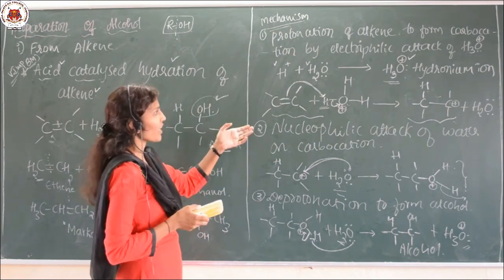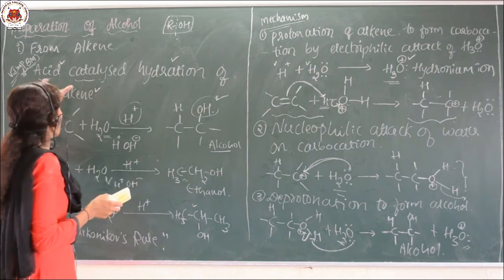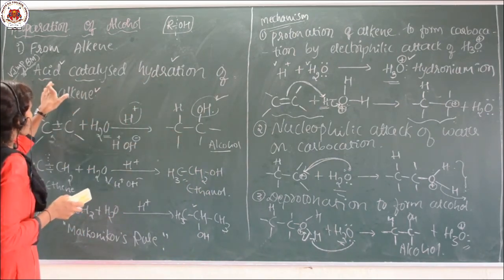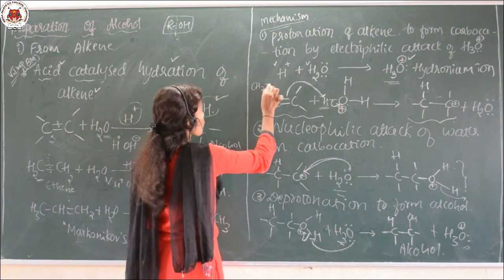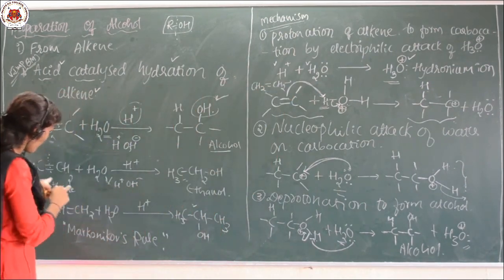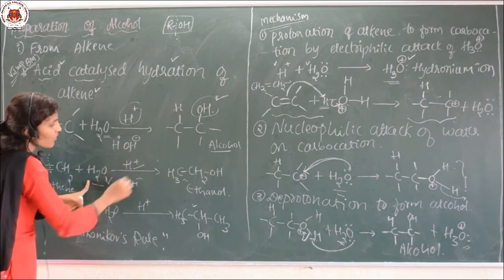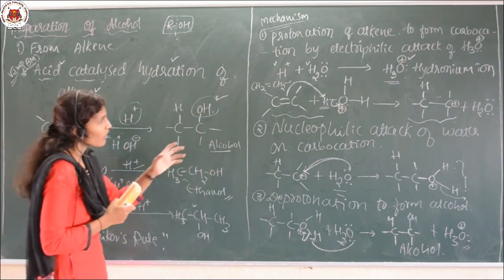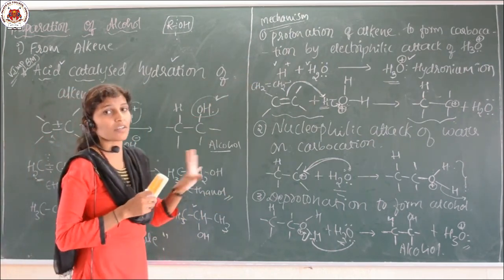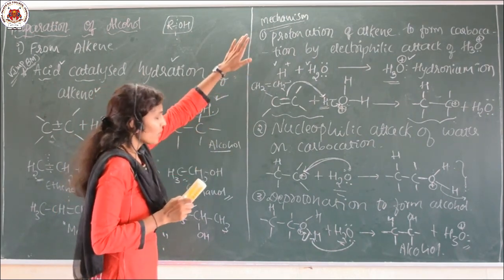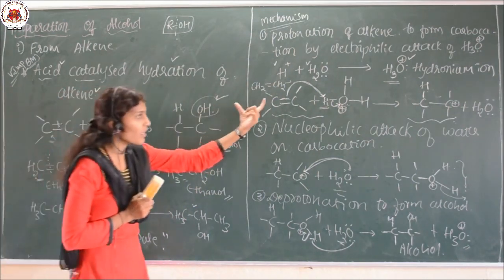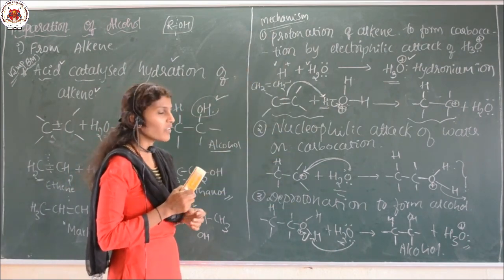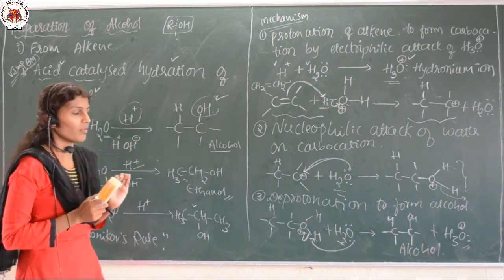Sometimes they will ask not only the general mechanism but also: write the mechanism for acid catalyzed hydration of ethene to ethanol, taking CH₂=CH₂. Here I have shown ethene plus water under acid catalyzed hydration forms ethanol and the mechanism was explained generally. The homework is to write the mechanism by taking ethene as the reactant and follow the three steps. Further methods of preparation we will continue in our next class. Thank you.